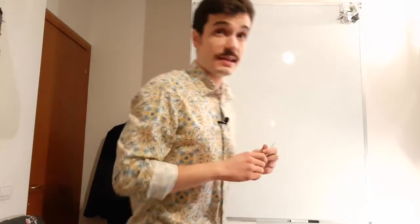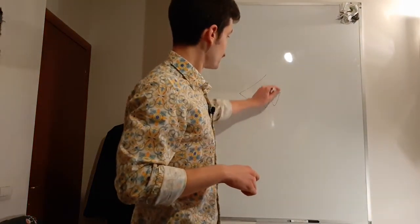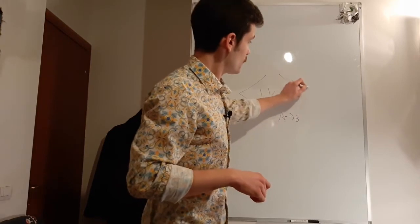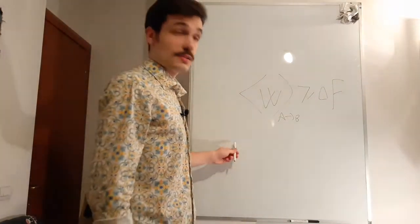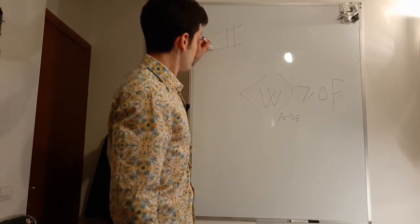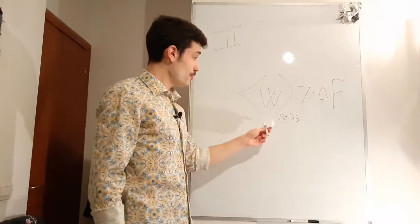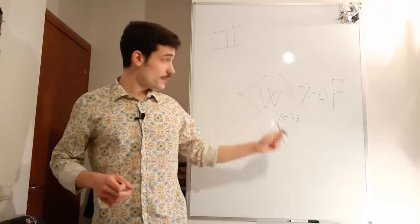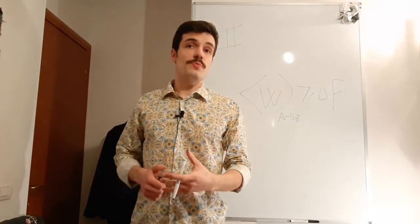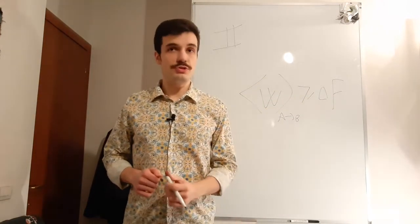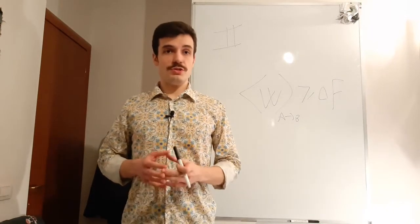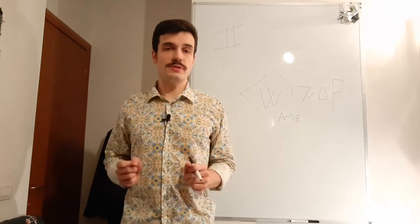Another interesting thing about non-equilibrium thermodynamics is that you can derive that the average work going from A to B is always greater than or equal to delta F. This is nothing more than the second principle of thermodynamics for non-equilibrium processes. So even though in individual non-equilibrium simulations the work is not always bigger than or equal to the free energy difference, it is true on average — a non-equilibrium process will still respect the second law of thermodynamics on average.